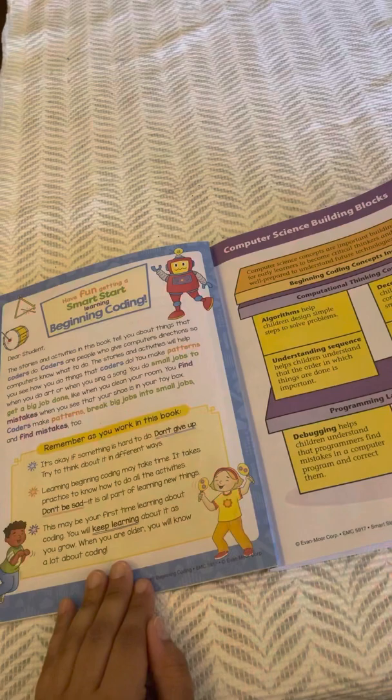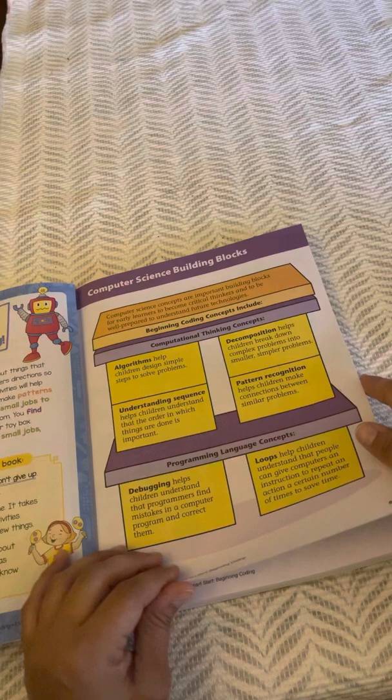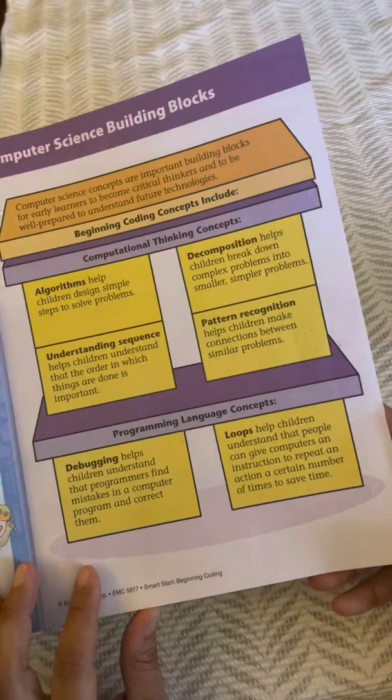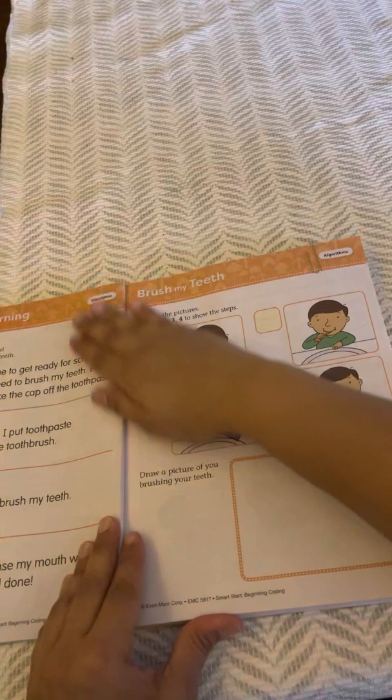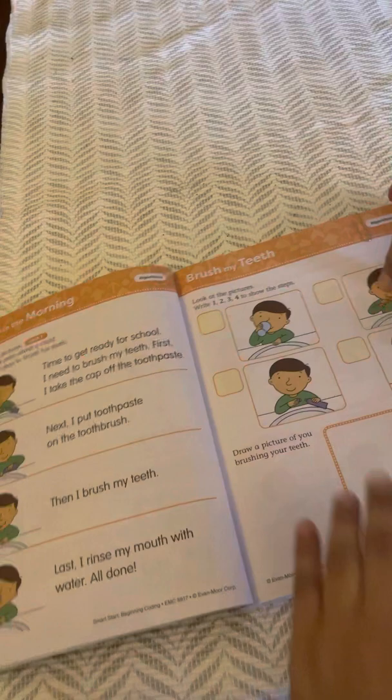There's a cover page and table of contents you can pause and read later. There's a nice introduction page for students, and vocabulary pages with words you might want to naturally add into conversation while working with your kids. Every Evan Moore book has a 'how to use this book' section. This book is broken up into six sections, and each section is color coordinated.